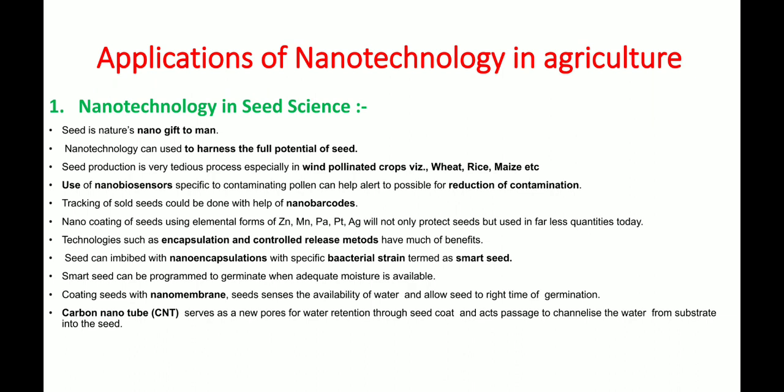Seeds can be embedded or coated with nanoparticles using bacterial strains to reduce pest, disease, fungal, or bacterial infestation — this is termed a 'smart seed.' Smart seeds can be programmed to germinate when adequate moisture is available. Nano membrane coating of the seed senses water availability and allows control of the right germination time, improving germination. Carbon nanotubes (CNTs) are also included in seed science.